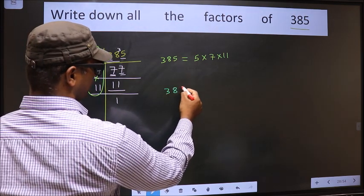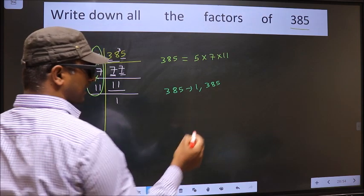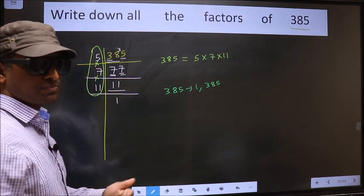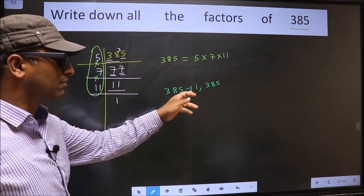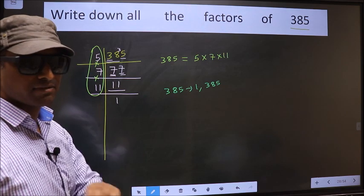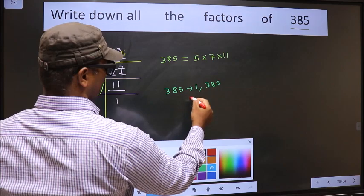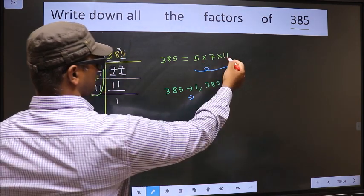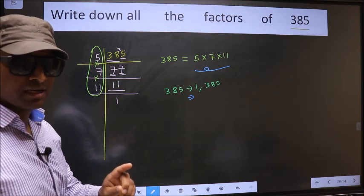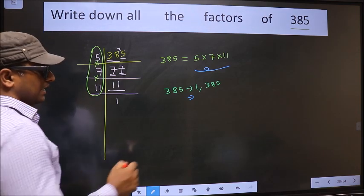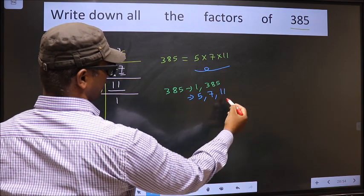Any number you take will definitely include 1 and the number itself in its factors. Next, from these numbers you select one different number at a time. Like that, how many numbers do we get? We get 5, 7, and 11. That's it.